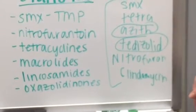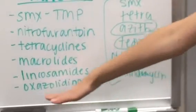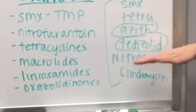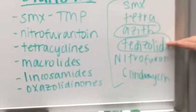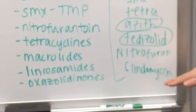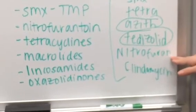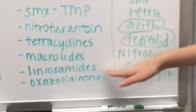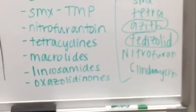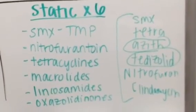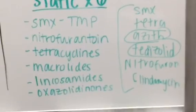Then we have tedizolid, which is going to fall into the oxazolidinones. That's just an example. We also have linezolid, which would fall into that category too. And then we have our nitrofurantoin, which is our Macrobid or Macrodantin. And then last we have our lincosamide, which is clindamycin. So it spells out static if that helps you remember the ones that are static versus cidal as well.